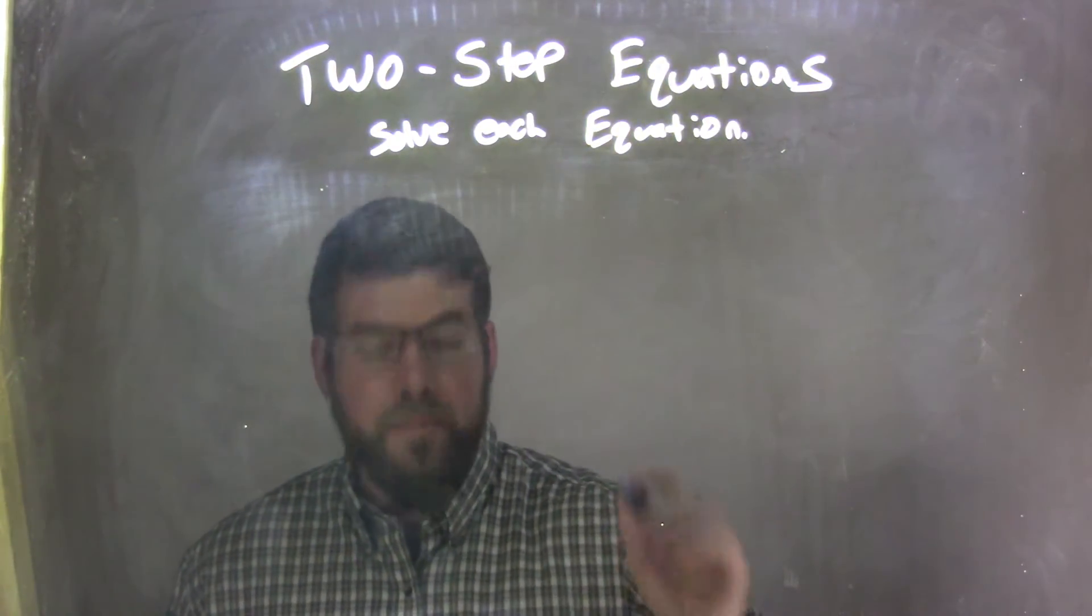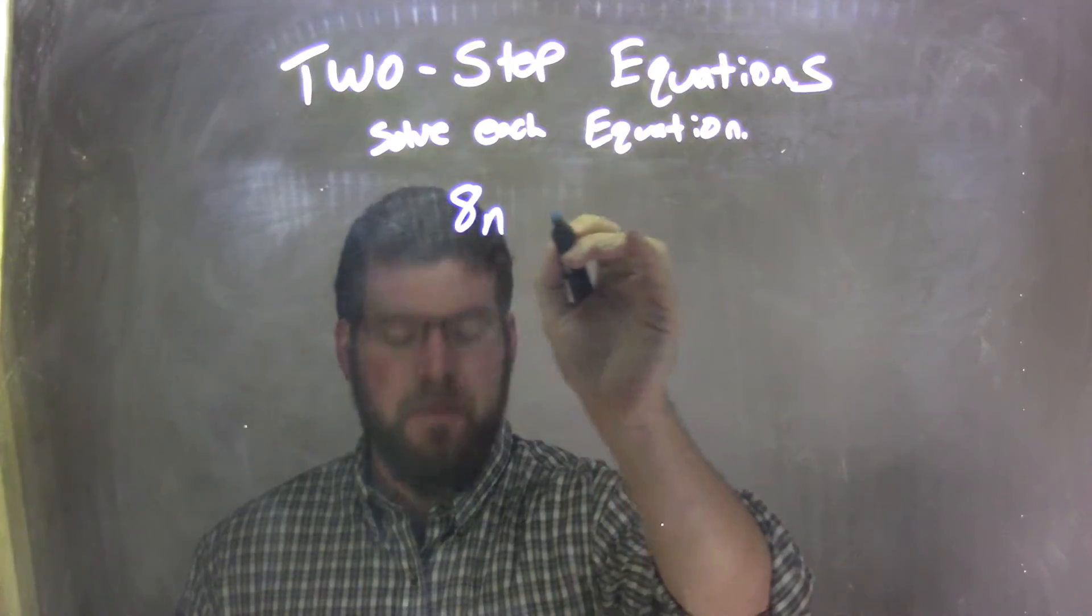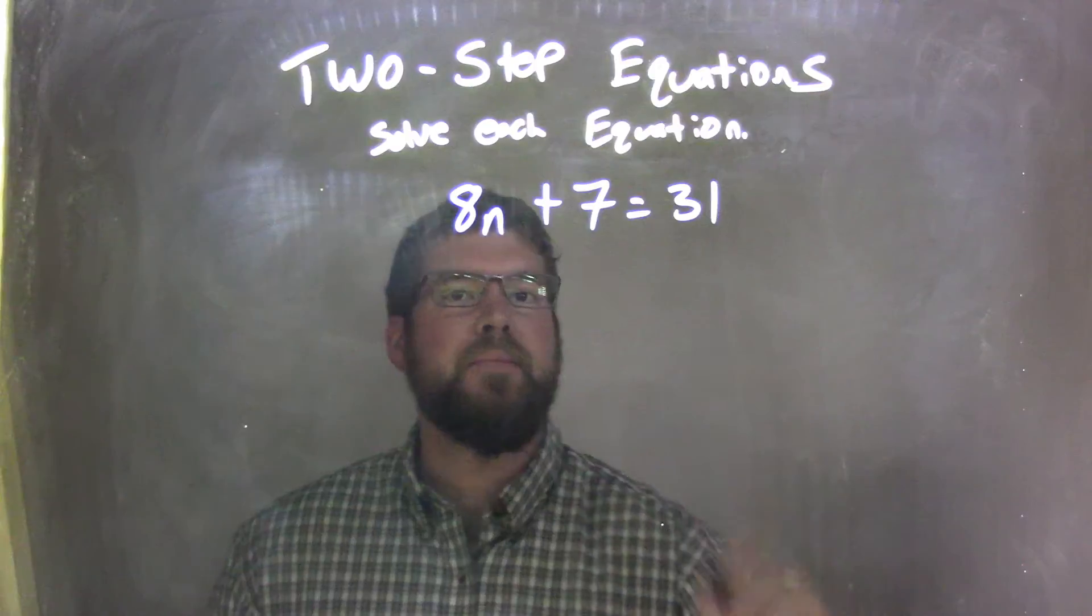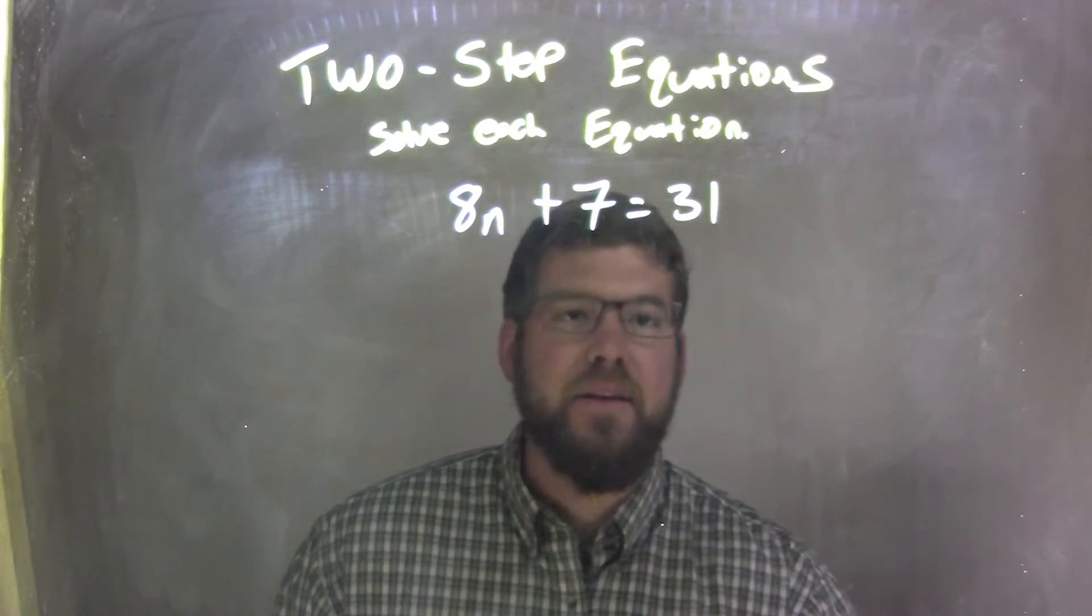So, if I was given this equation: 8n plus 7 equals 31. So 8n plus 7 equals 31.